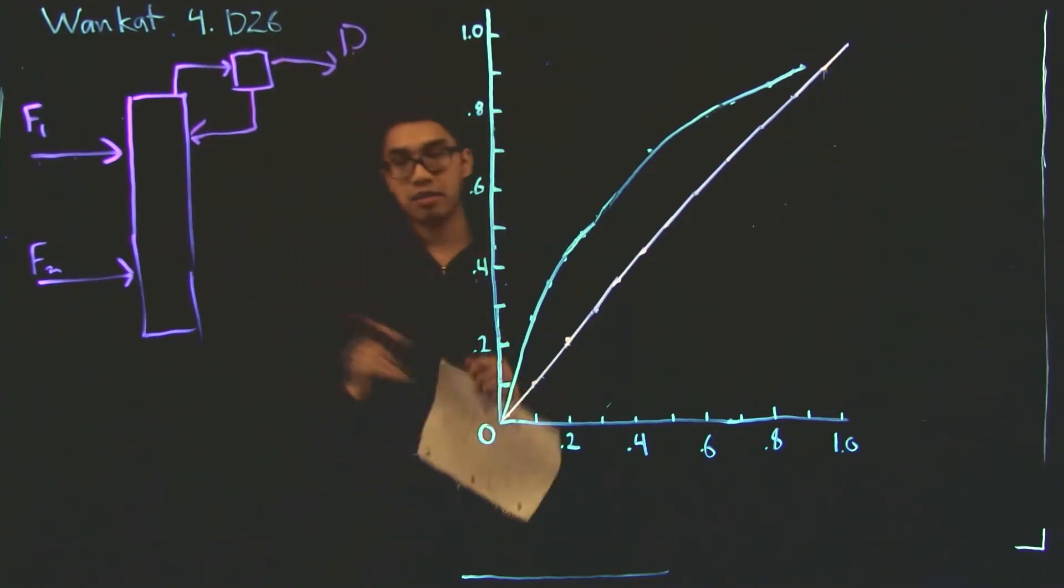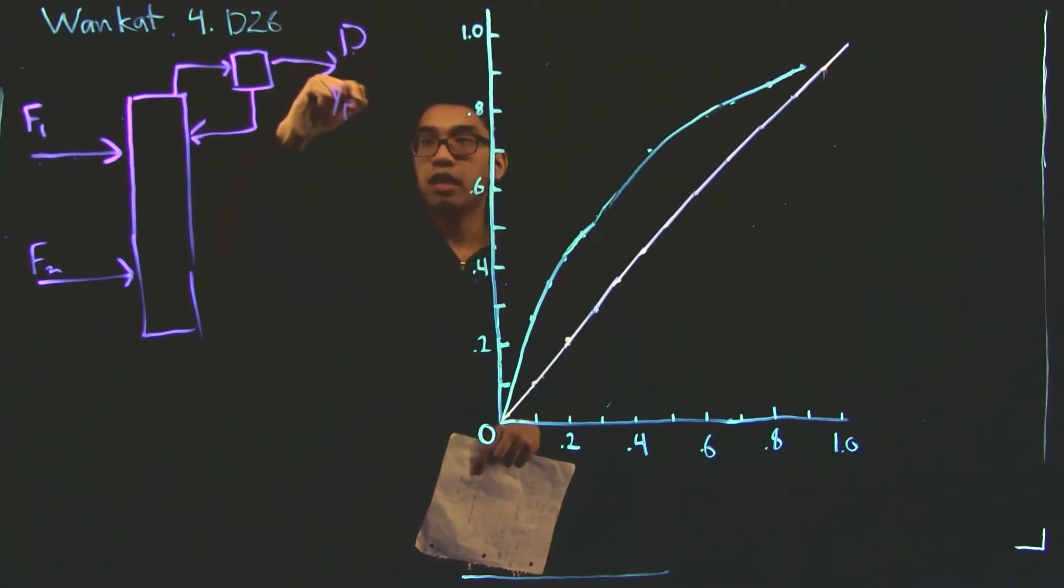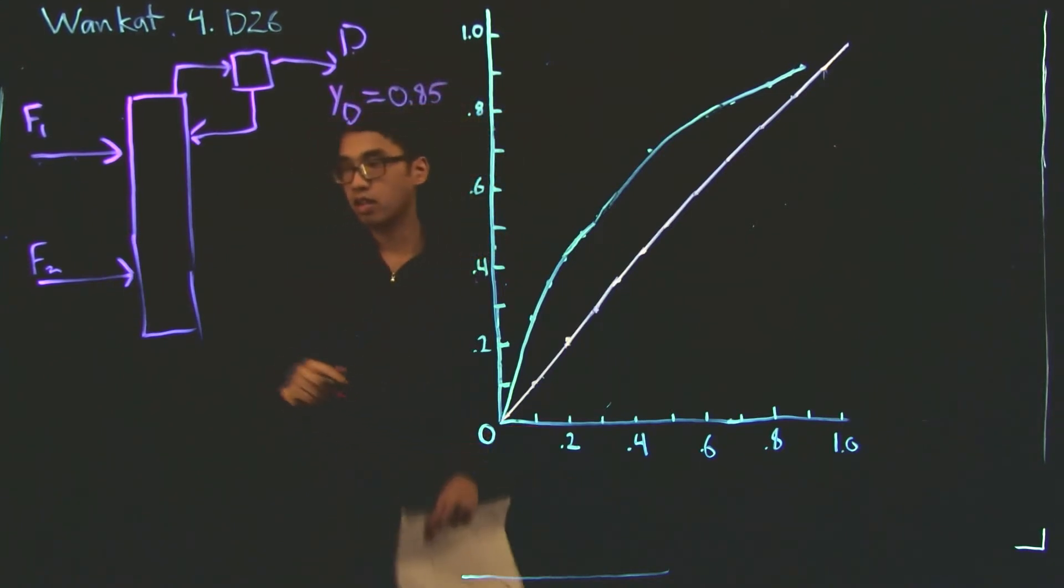This is an acetone ethanol distillation. And the distillate is 85% acetone. Now on the reboiler side, we have a total reboiler. And so the liquid comes out. Some of it is sent to the reboiler, where all of it is then sent back up as vapor. The remainder is the bottoms.